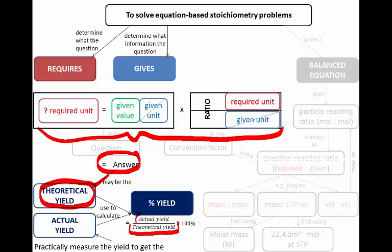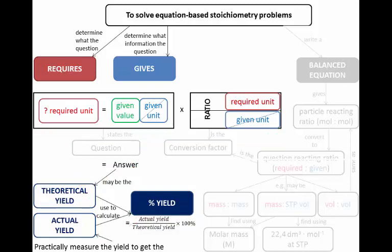We're given the actual yield. Divide actual by theoretical, multiply by 100, and we've solved our problem. So now let's get some practice with actual numbers.